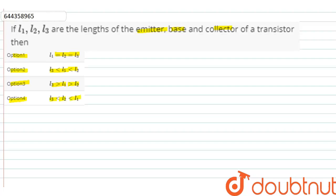Let us make a diagram of the transistor. This is the emitter, this is the base, this is the collector. And the lengths are L1, L2 and L3.